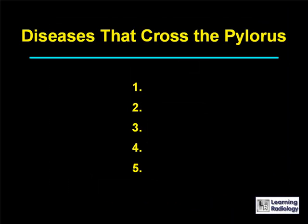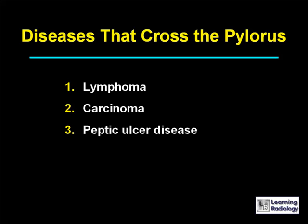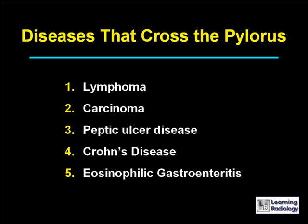The differential is diseases that cross the pylorus. There are five causes: lymphoma, carcinoma, peptic ulcer disease, Crohn's disease, and eosinophilic gastroenteritis.